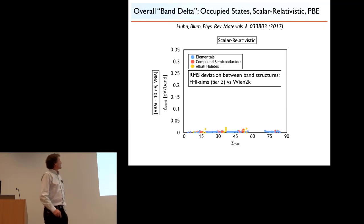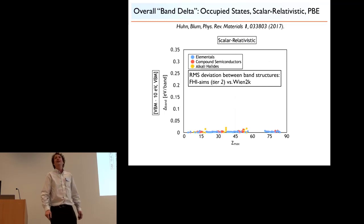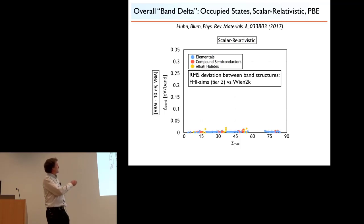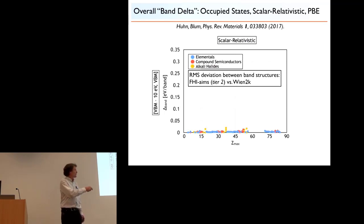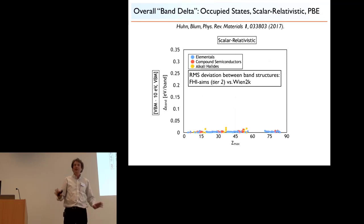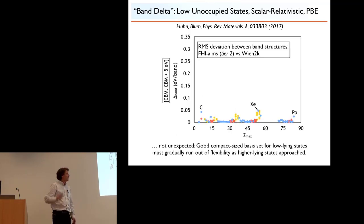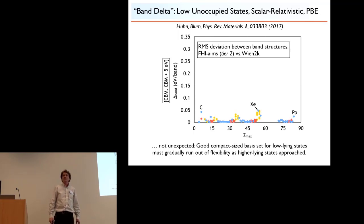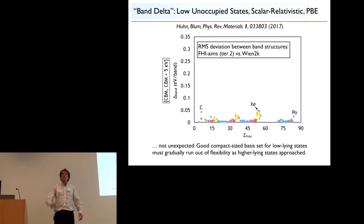We can quantify this further by doing the benchmark as a least-squares energy between band structures for all 103 compounds — ordered here according to the maximum nuclear charge in the system, going from lithium to bismuth. For the valence states, we're somewhere in the range of 10 meV or lower. Some alkali metals had outliers slightly higher, which may relate to higher-lying local orbitals. For the conduction band states up to 5 eV above the conduction band edge, we're in the 50 meV range — this is where you would increase the FHI-aims basis set, and it can be done.